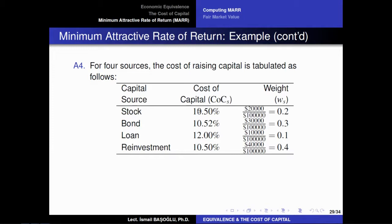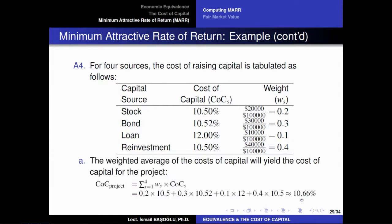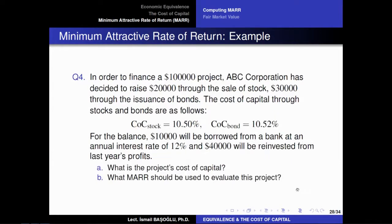We have different methods of raising capital, each with a different cost of capital. The reinvestment of own profits has the same cost of capital as stocks: 10.5%. Because we are obtaining different shares of the $100,000 with different methods, we take a weighted average of the cost of capital across all sources. The result is that the cost of capital for this project — for these $100,000 — is 10.66%, depending on the methods used to raise capital and the cost of capital of each method.